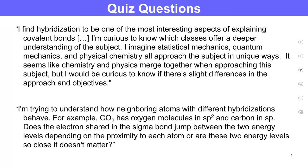This ties into something else - which classes offer a deeper understanding of the subject? Physical Chemistry 2 is an entire class on quantum mechanics. Physical chemistry is basically where physics and chemistry overlap from the chemist's point of view. Physics departments call it chemical physics while chemistry departments call it physical chemistry. It's applied physics - taking quantum mechanics rules and applying them to real-world situations in a way that physics doesn't always do.